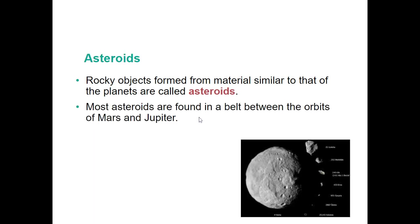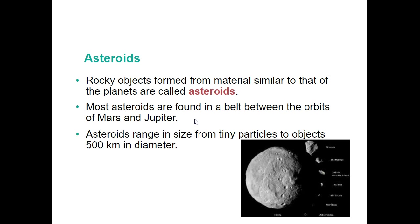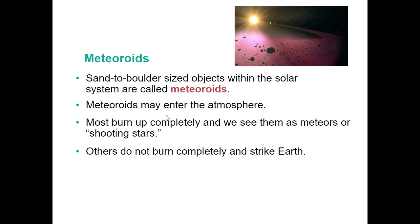Asteroids are very rocky and don't have much frozen material. Most are found in the asteroid belt between Mars and Jupiter and can range in size from a dime to 500 kilometers in diameter. Meteoroids are small objects within the solar system. Most burn up completely as they enter the atmosphere — those are called shooting stars. When they actually strike the Earth, they are called meteorites. So meteoroids burn up in the atmosphere; meteorites do not.